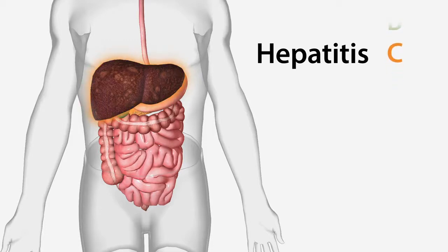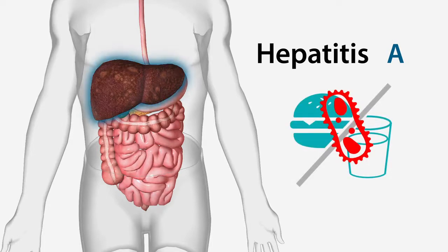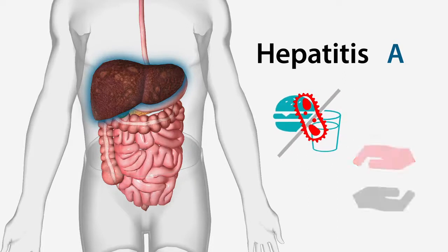Hepatitis A usually causes a self-limited acute hepatitis that does not result in chronic liver injury. It is usually transmitted by consuming contaminated food or water, or by direct contact with an infected person.